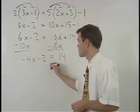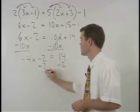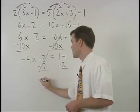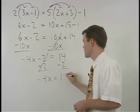Add 2 to both sides, and we have negative 4x equals 16.